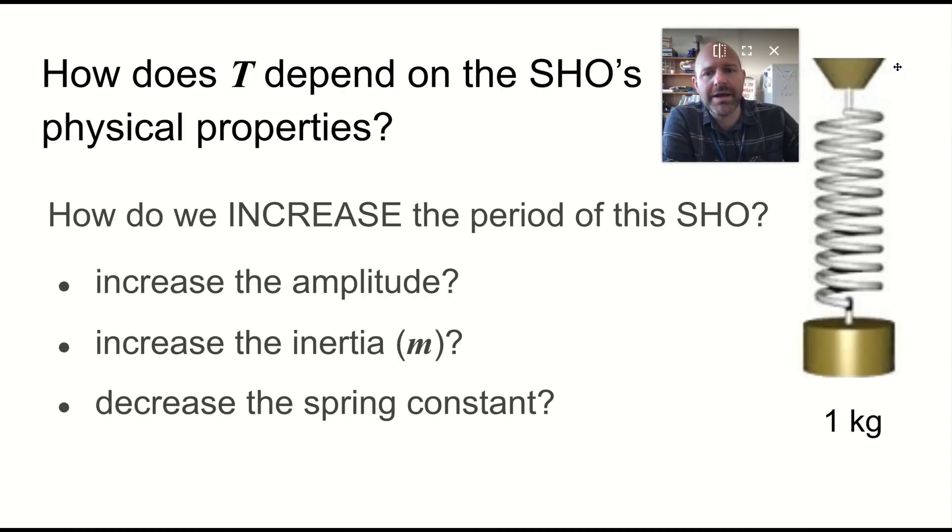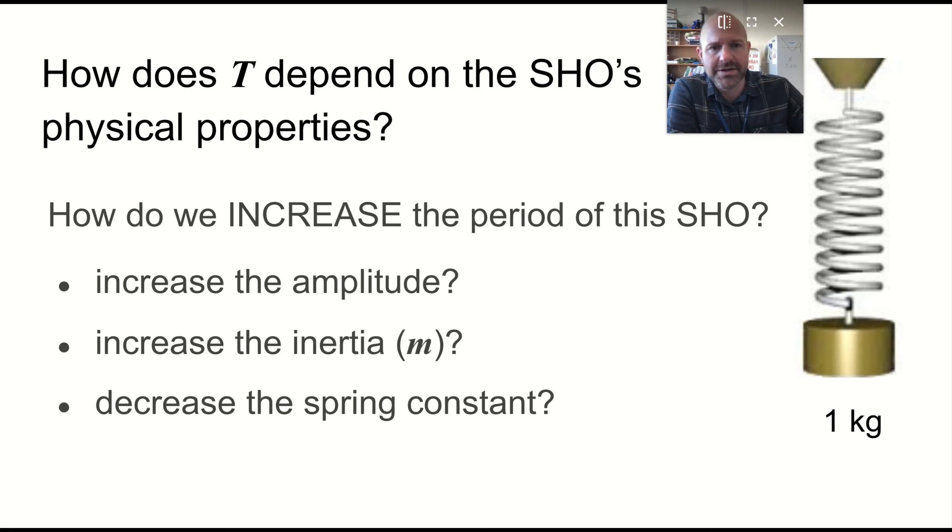So how does the period depend on the simple harmonic oscillator's properties? If you think about a mass spring system, how do we increase the period? Can we change the amplitude or the maximum displacement? Do we change the inertia or the mass? Do we decrease or increase the spring constant? Will those things increase the period? Will they decrease it? Will they leave it unaffected?